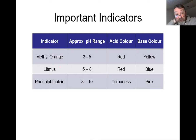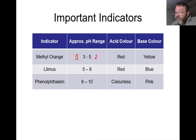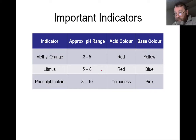Our three indicators are methyl orange, litmus, and phenolphthalein. Methyl orange changes color between pH 3 and 5 — below 3 it's red, above 5 it's yellow, with a mix in between. Litmus is one color at pH 5 and below, and another color at 8 and above. Phenolphthalein is one color below pH 8 and another color above pH 10.